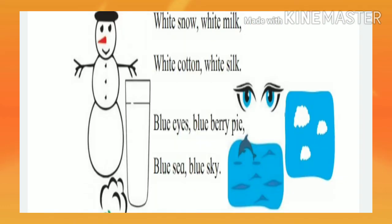So now next, you see what is there. White snow, white milk. White means pandra (white). Look at the picture — white snow. Is snow white? White milk — dut (milk) is pandra. White cotton — kapoos (cotton) — what color is it? Pandra (white).